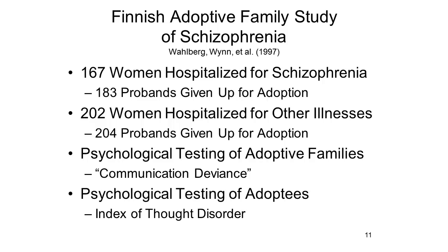A nice demonstration of the interaction of diathesis and stress on schizophrenia is provided by the Finnish adoptive family study of schizophrenia. The subjects were 183 children born to 167 women in Finland who had been hospitalized for schizophrenia and then given up for adoption. A control group consisted of children born to women hospitalized for other illnesses who had also been given up for adoption. Through psychological testing, the adoptive families were rated on a scale of communication deviance — basically how difficult it is to follow and understand a conversation with these people. The adoptees themselves were scored on an index of thought disorder, the primary psychological deficit in schizophrenia.